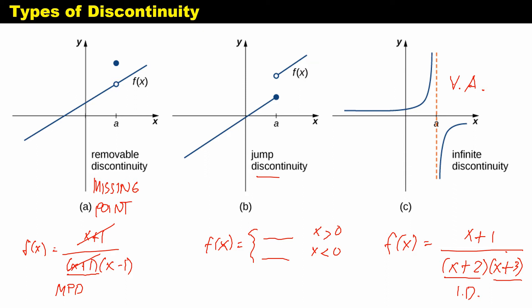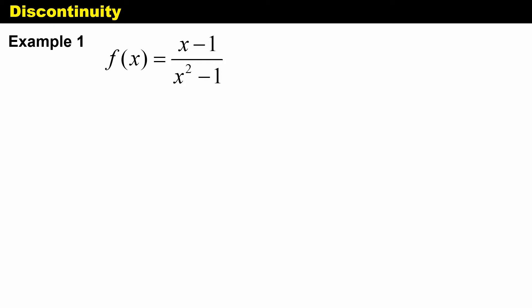Let's move on to our first example: f(x) = (x - 1) / (x² - 1). Remember that discontinuity happens only if your function is a rational function and if your denominator becomes zero. When looking for points of discontinuity, all we need to do is deal with our denominator and equate it to zero. Whatever values make our denominator equal zero are your points of discontinuity. Let's factor out our denominator.